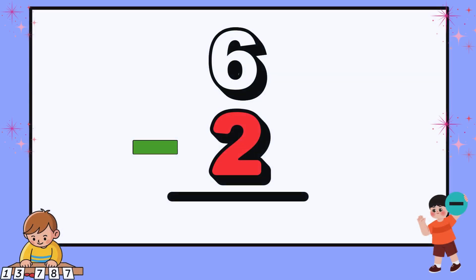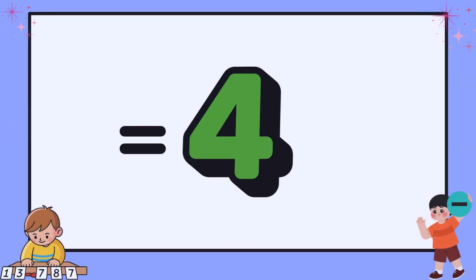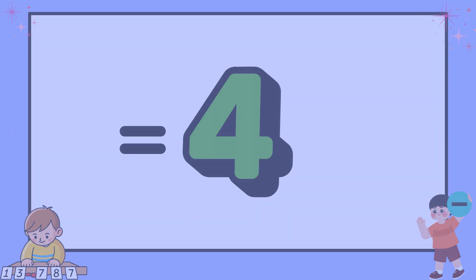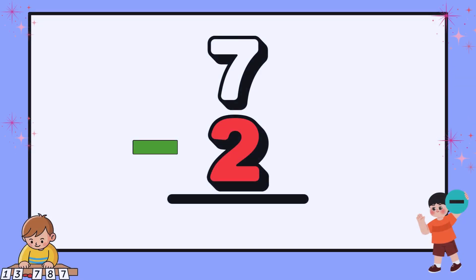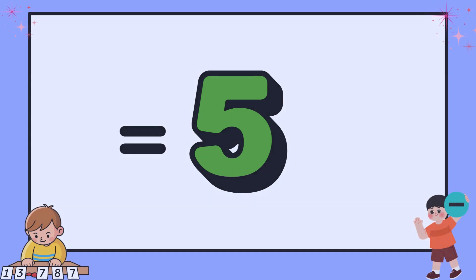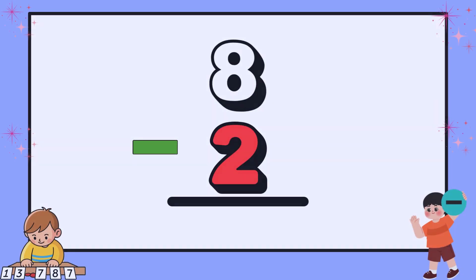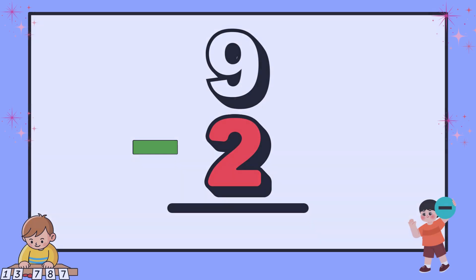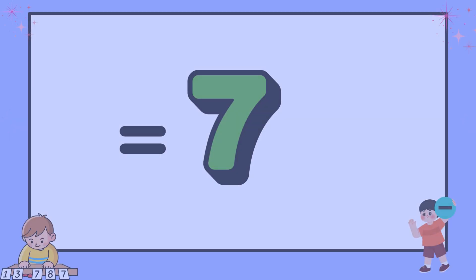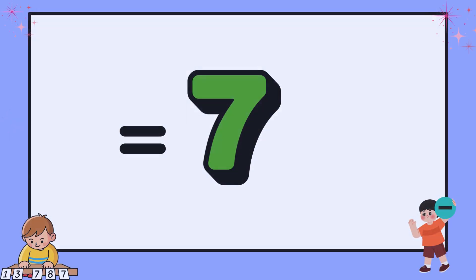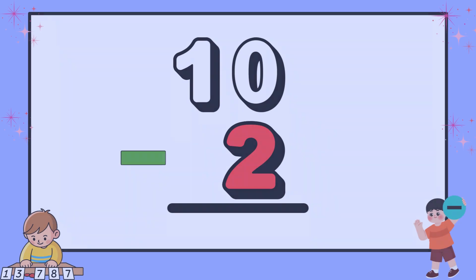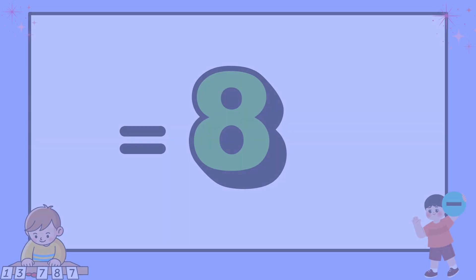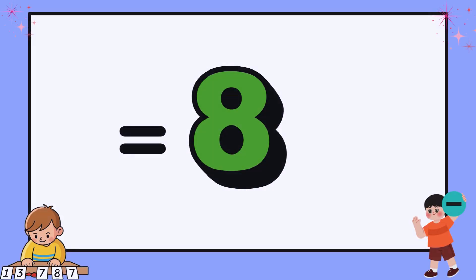Now, 6 minus 2 equals 4. Moving on, 7 minus 2 equals 5. Continuing, 8 minus 2 equals 6. From there, 9 minus 2 equals 7.